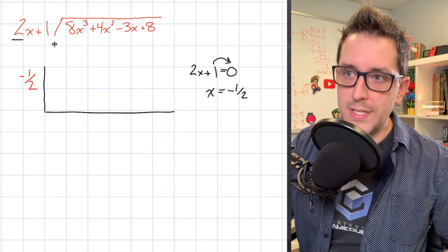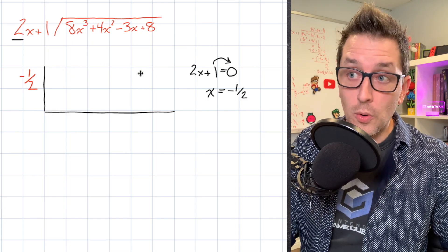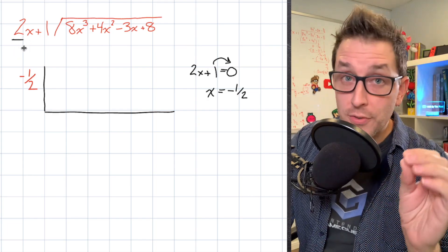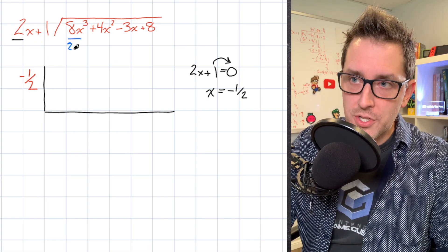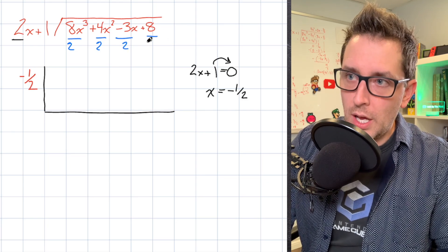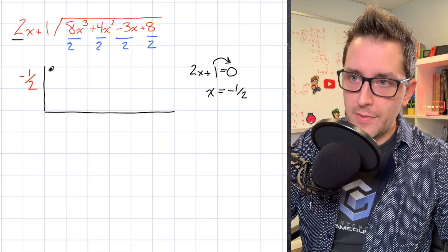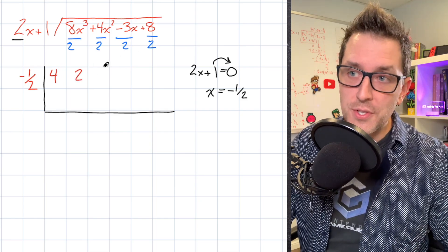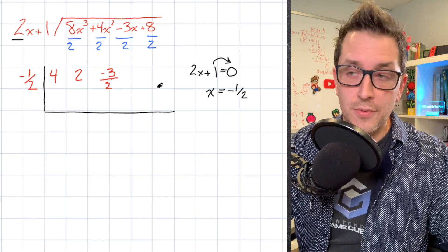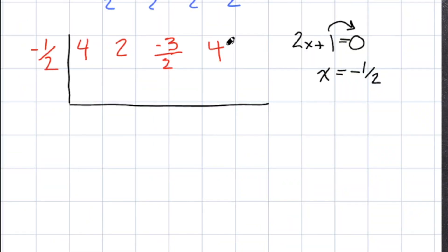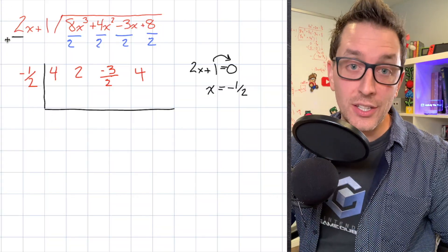Normally with synthetic division, we take the coefficients on the dividend — the 8, the 4, the negative 3, and that 8 at the end — and stick them in the top row of our table. But because we are dealing with a divisor that has a leading coefficient that is not 1, we're going to make a slight alteration: we're going to divide each of our coefficients by that leading coefficient, which is 2. So 8 divided by 2 is 4, 4 divided by 2 is 2, negative 3 over 2 stays as a fraction, and 8 divided by 2 is 4. That's the top row of our synthetic division table.